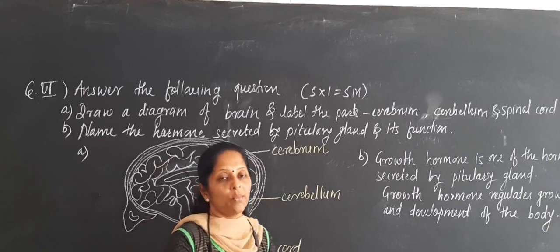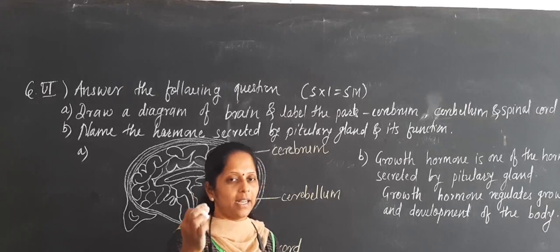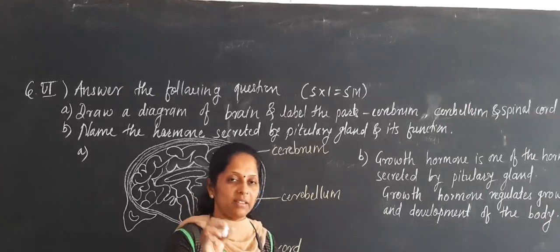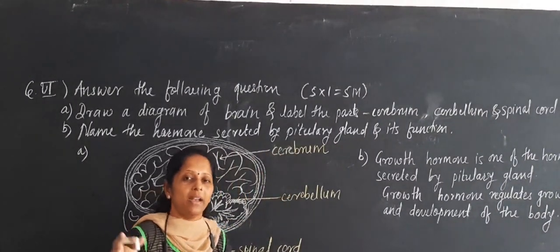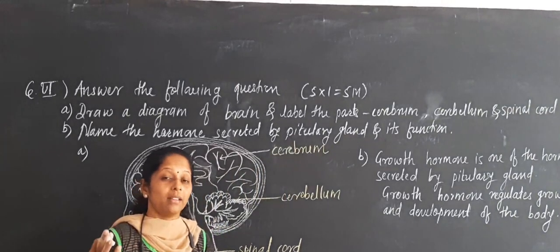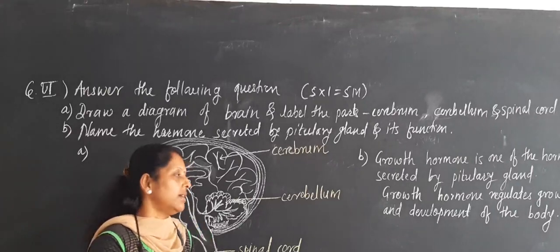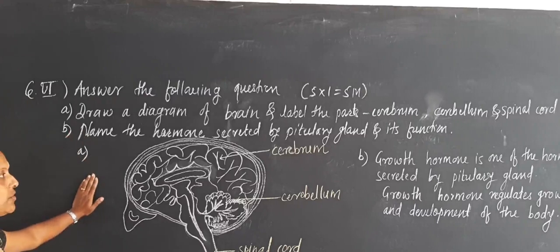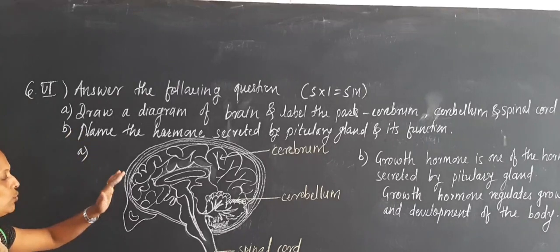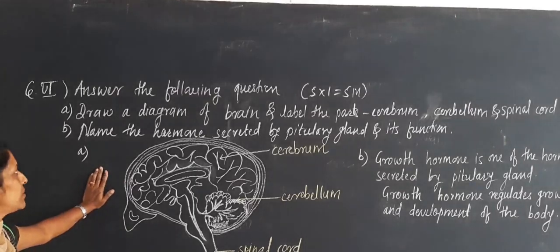These are the functions and hormones. All the hormones secreted by our body, which glands secrete them, and about deficiencies — when there are deficiencies, what symptoms are shown — you should learn all of that properly. This is question number 6, covering hormones and the brain diagram. The mark distribution is there and you can find out which questions are important.